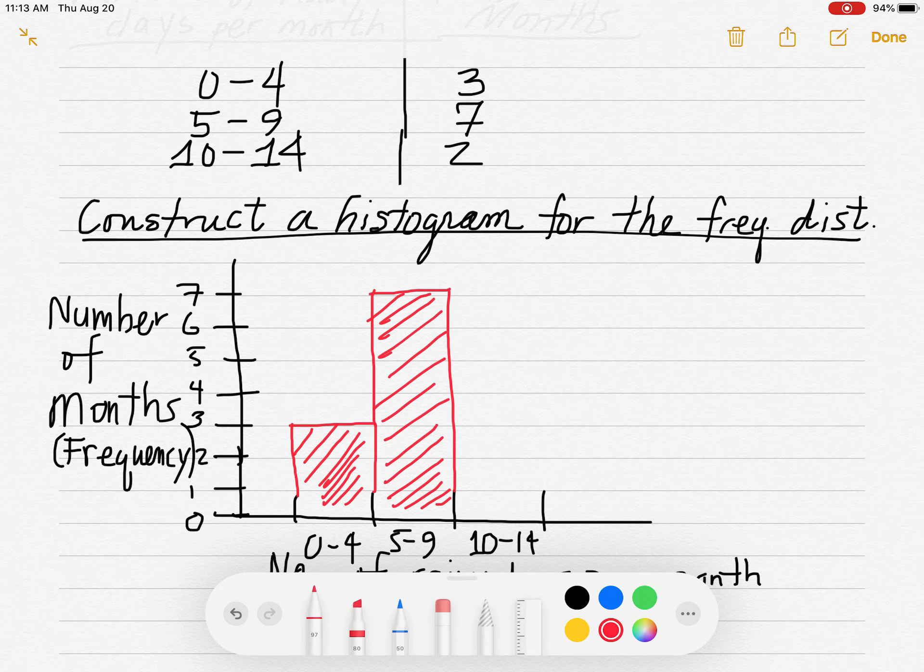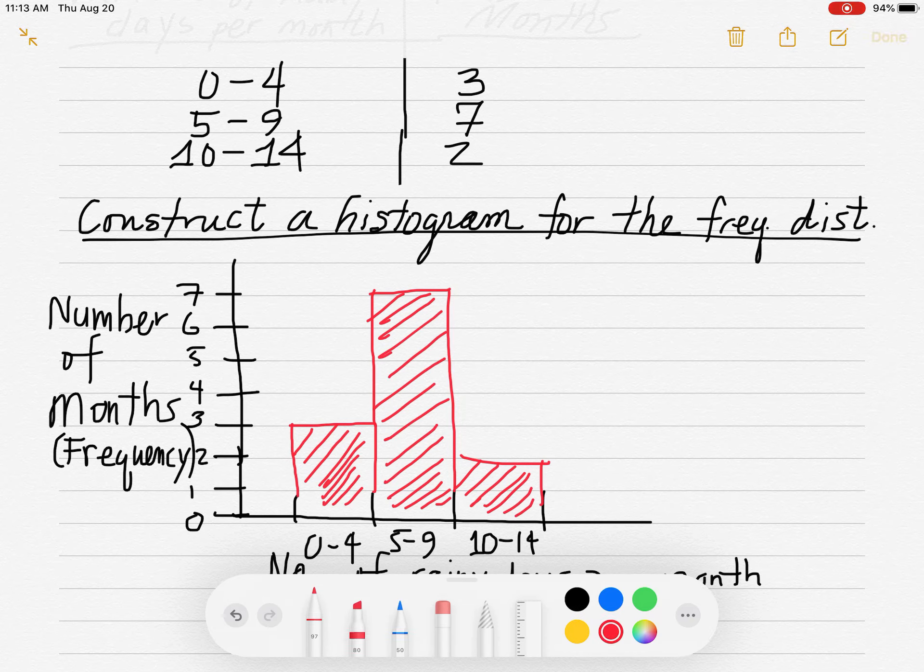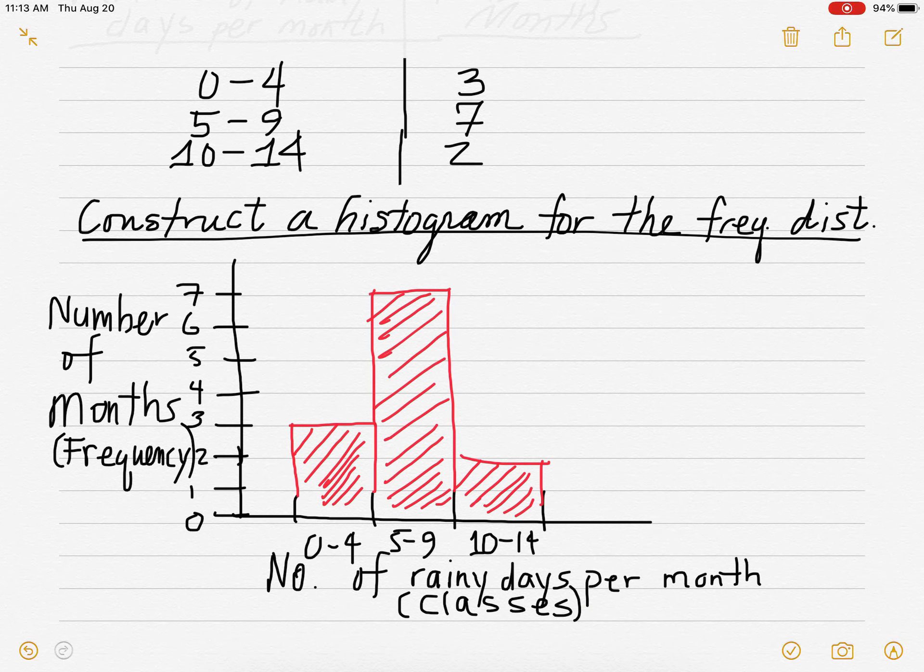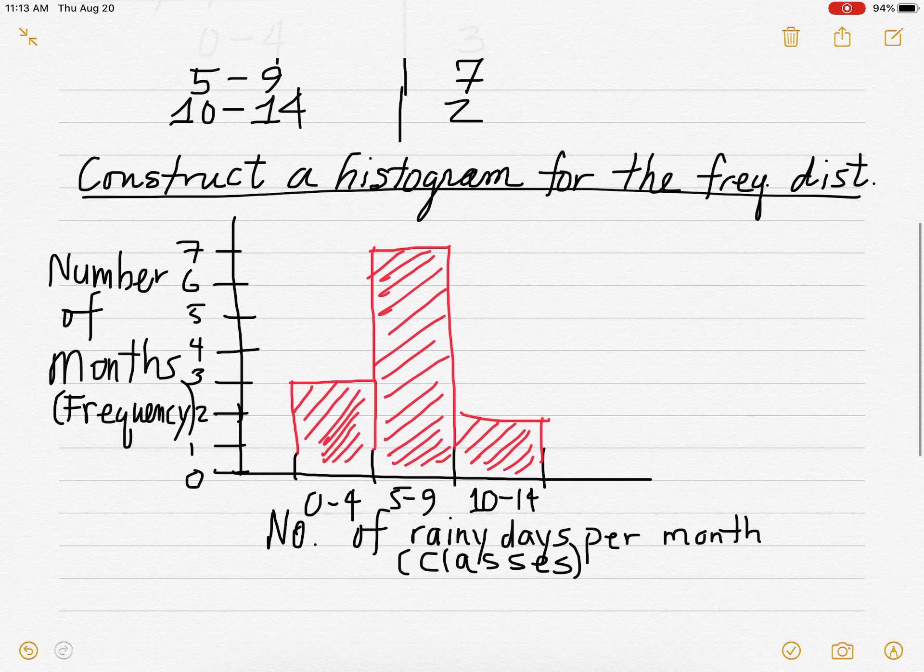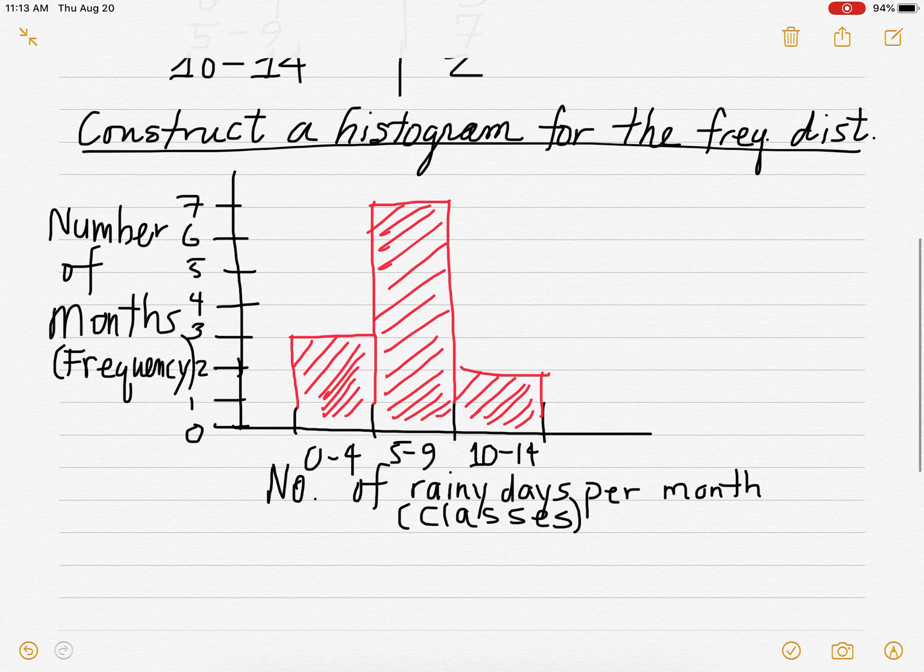And then we have two months. Two months that have 10 to 14 rainy days. So where's that? Two is about like right here. All right. So that's one way you can do it. Let me show you another way that is often used.